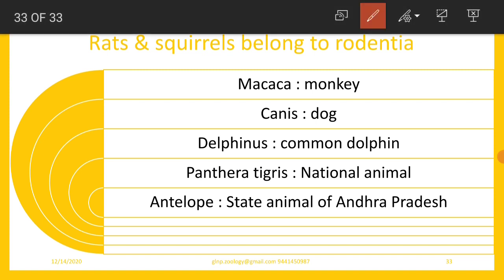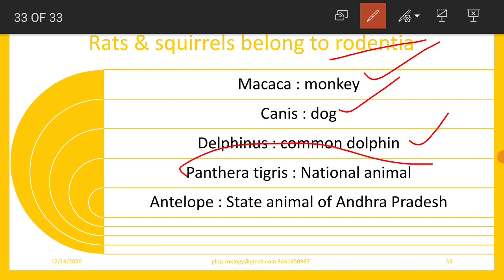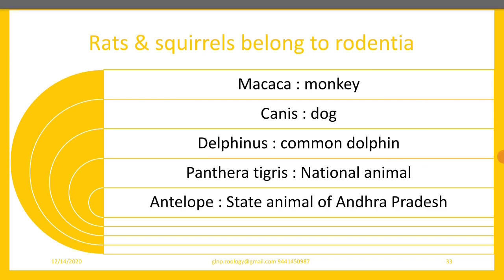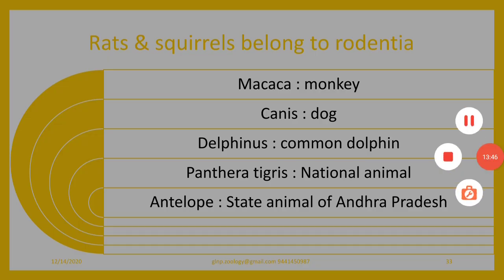Rats and squirrels belong to the order Rodentia. Coming to the scientific names of certain mammals: Macaca is the scientific name of monkey, dog is scientifically called Canis, Delphinus is the scientific name of the common dolphin, the national animal of India is Panthera tigris, and the antelope is the state animal of Andhra Pradesh. That covers the general characters and classification of mammals. Thank you very much.